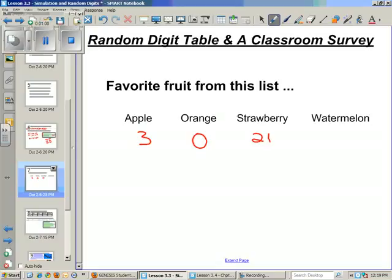How many would choose watermelon? One, two, three, four, five, six, seven, eight, nine, ten, eleven.